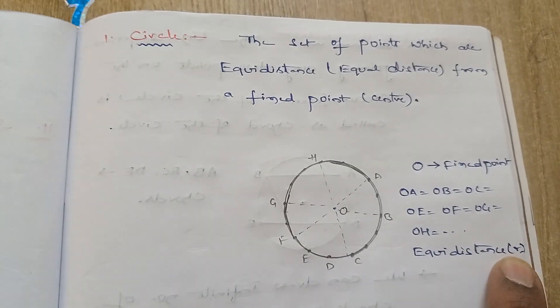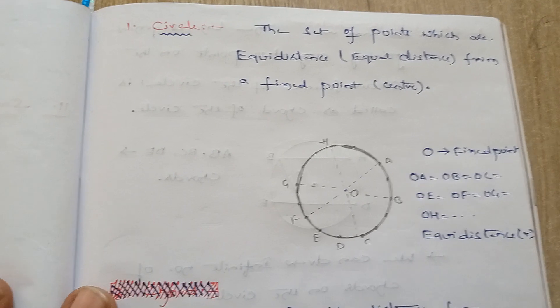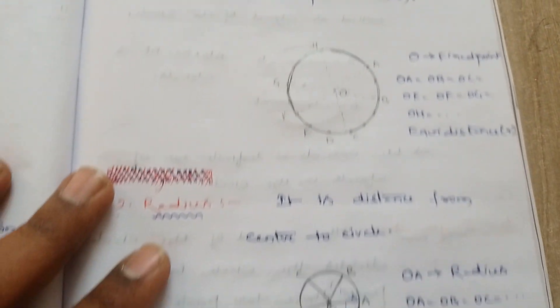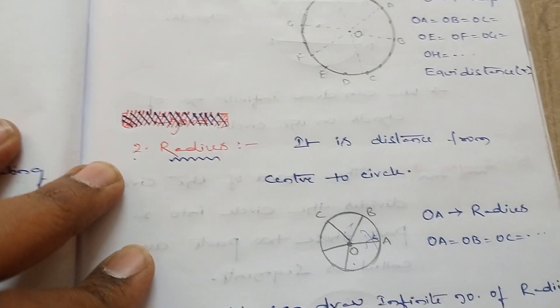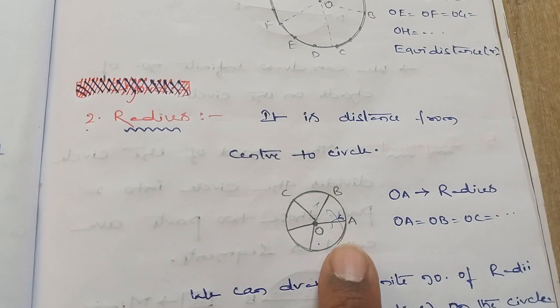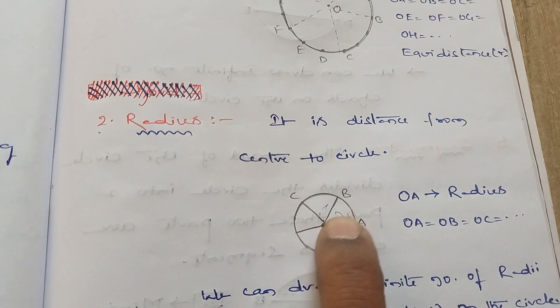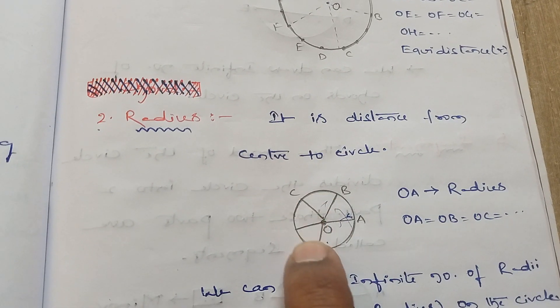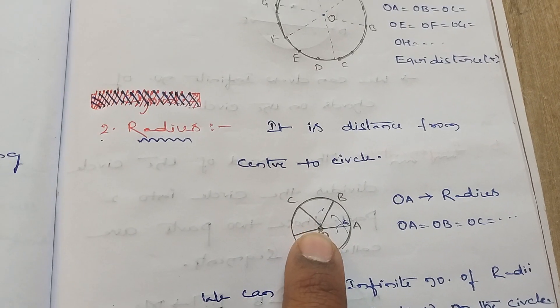What is a radius? It is the distance from the center to the circle, or more precisely, the distance from the center to the circumference of the circle. This is generally termed as radius.